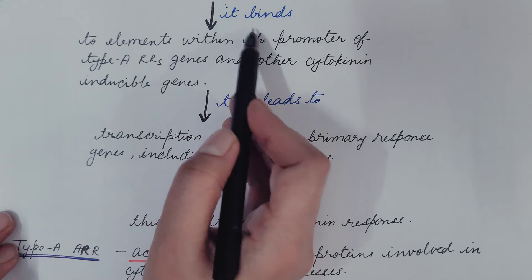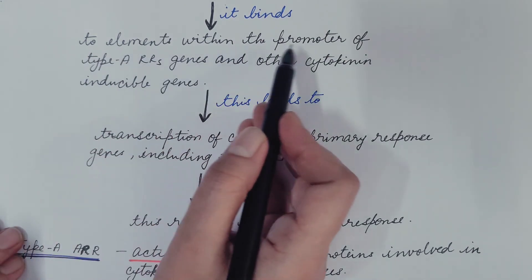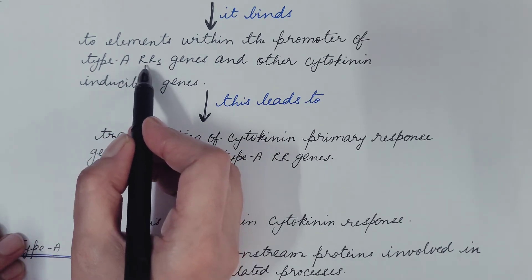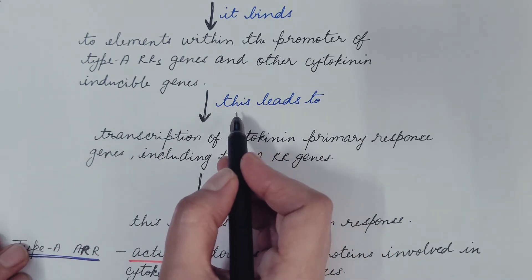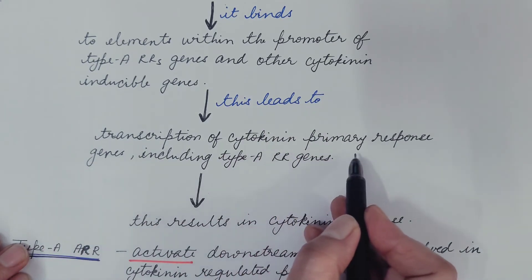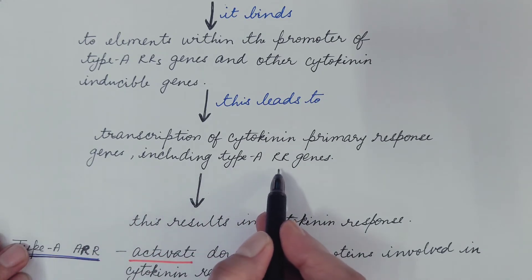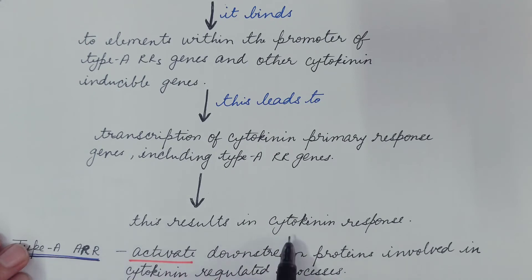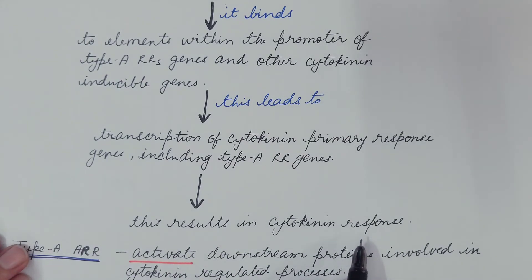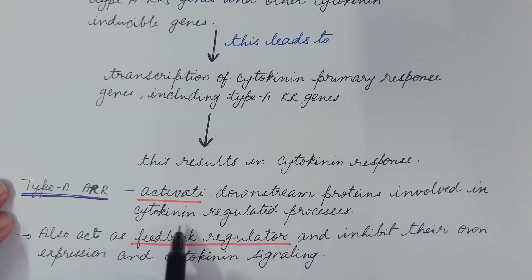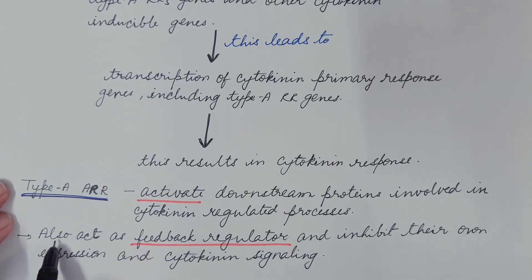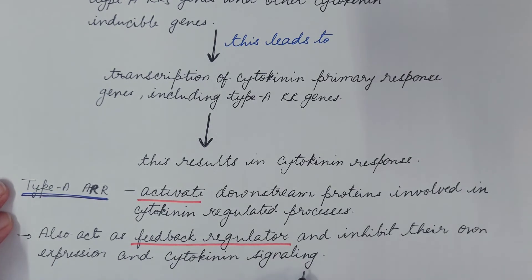This activated Type B ARR then binds to elements within the promoter of Type A ARR genes and other cytokinin-inducible genes. This binding leads to transcription of cytokinin primary response genes, including Type A ARR genes, resulting in the cytokinin response seen as various physiological effects of cytokinin in plants. Type A ARR activates downstream proteins involved in cytokinin-regulated processes, and also acts as a feedback regulator, inhibiting its own expression and cytokinin signaling.